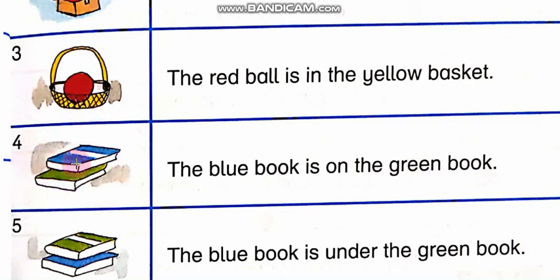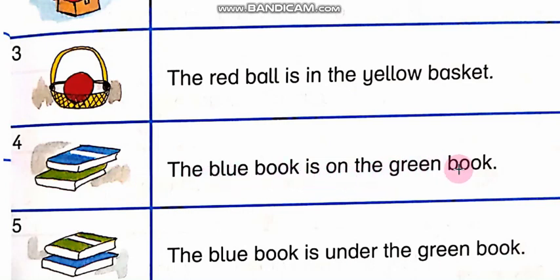In the fourth picture, there are two books — ek hai blue aur ek hai green. The sentence will be: The blue book is on the green book. On mean par — jou blue book hai woh green book par hai.